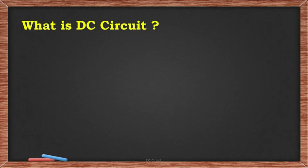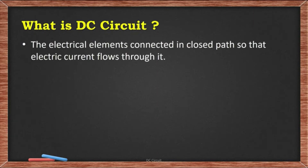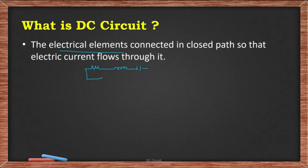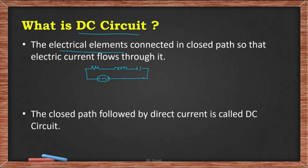What is a circuit? The electrical elements connected in a closed path so that electrical current flows through it is called a circuit. The electrical elements are resistor, inductor, and capacitor. A DC circuit is nothing but the closed path followed by direct current.